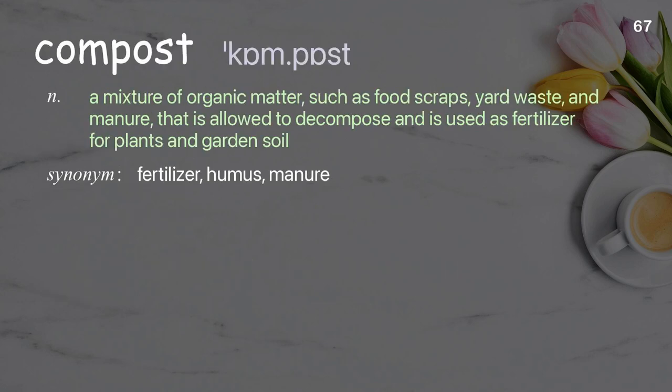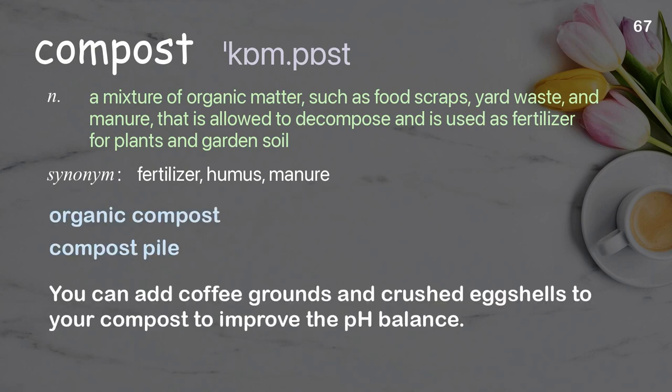Compost: a mixture of organic matter, such as food scraps, yard waste, and manure, that is allowed to decompose and is used as fertilizer for plants and garden soil. Examples: organic compost, compost pile. You can add coffee grounds and crushed eggshells to your compost to improve the pH balance.